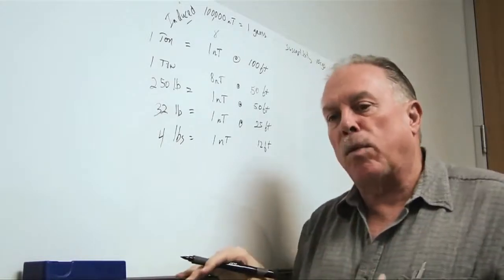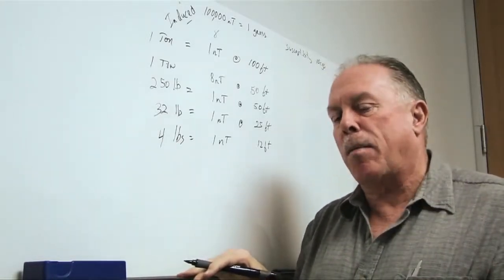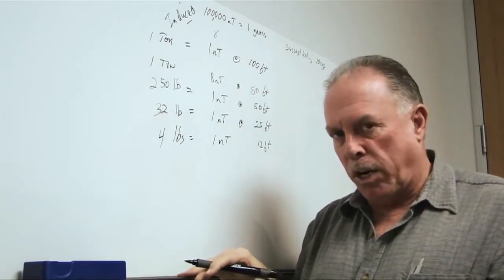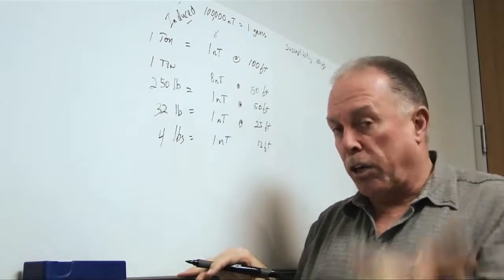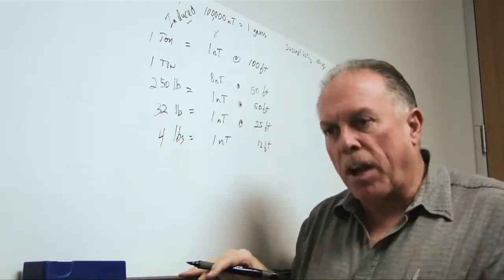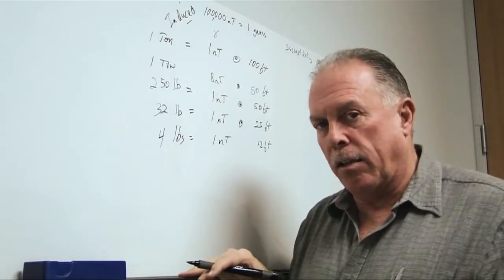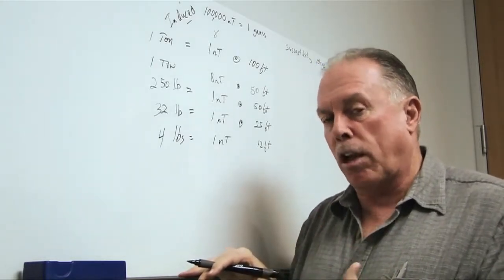All of these numbers are based just on the material being magnetized in the Earth's magnetic field. But, most of these objects that we're looking for, again, pipelines, telecommunication cables, wreck debris, parts of treasure ships, unexploded ordnance. All of these materials eventually will pick up a permanent magnetic field because they've been sitting in the Earth's magnetic field for a long time.